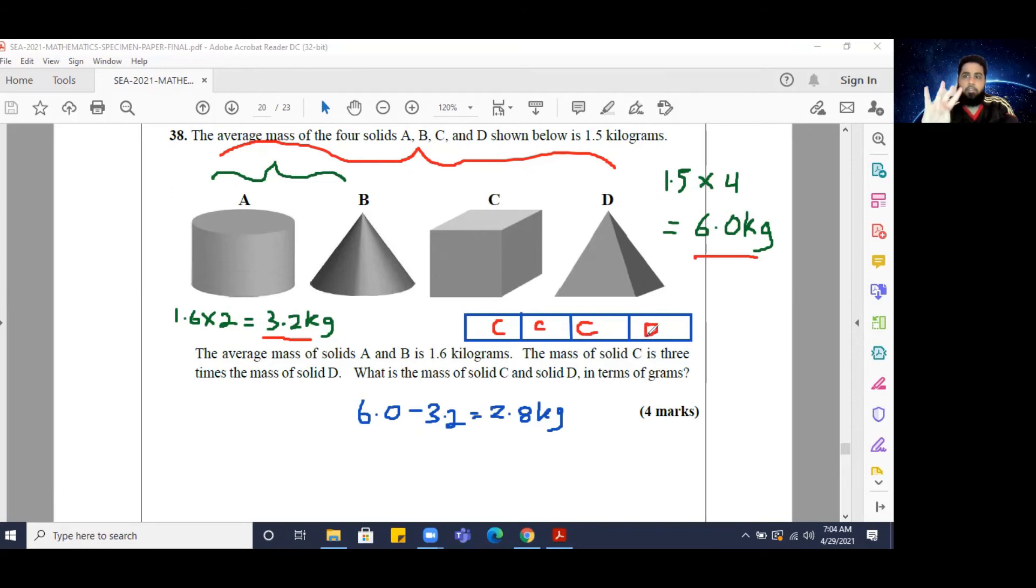So how many equal parts do I have together? I have four equal parts. So therefore, if I divide 2.8 kilograms by four, I'm going to get the individual size of a share.